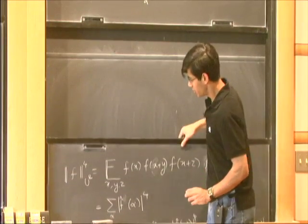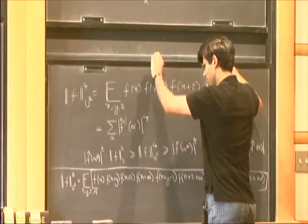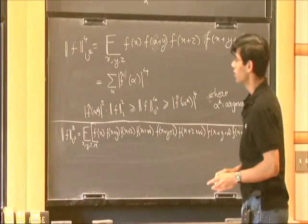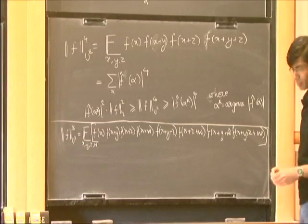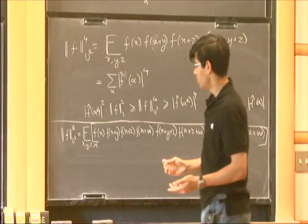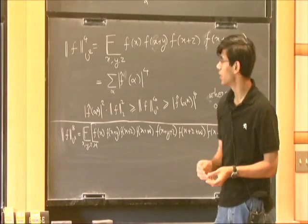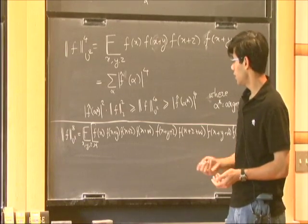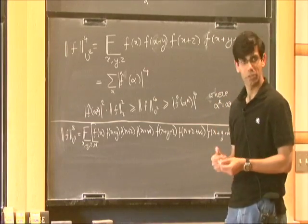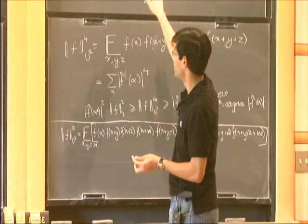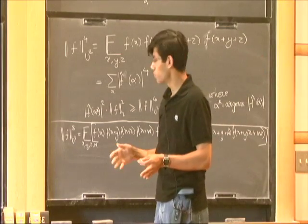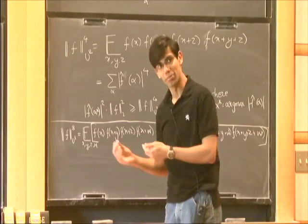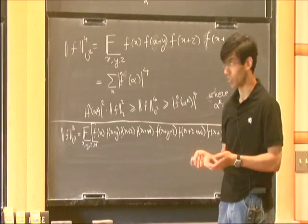Another notion I'll need is what are called Gowers norms. These were defined by Tim Gowers in his study of arithmetic progressions in primes. They help extend Fourier analysis to somewhat more general settings, which is what is called the theory of quadratic Fourier analysis — and that will be the subject of the talk. Let me just define these norms.